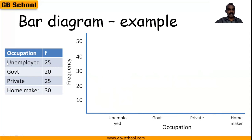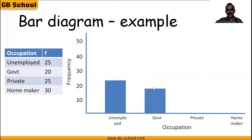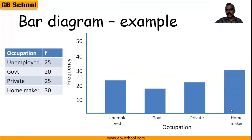In this example, unemployed is 25, so we erect the bar up to 25. For government employed it is 20, so the bar goes up to 20. Private is 25, so the bar goes up to 25. Homemaker is the highest at 30, so that bar goes up to 30. This is how we determine the height of each bar.